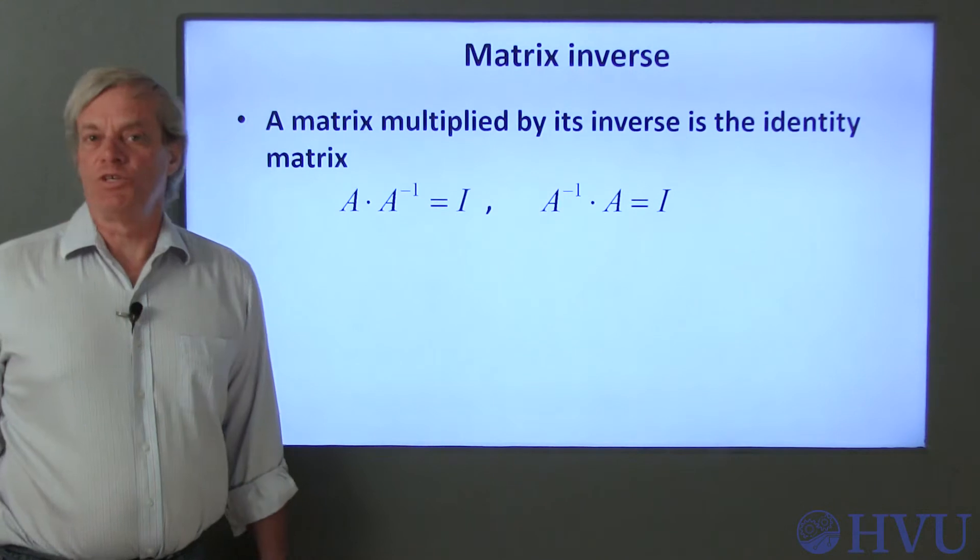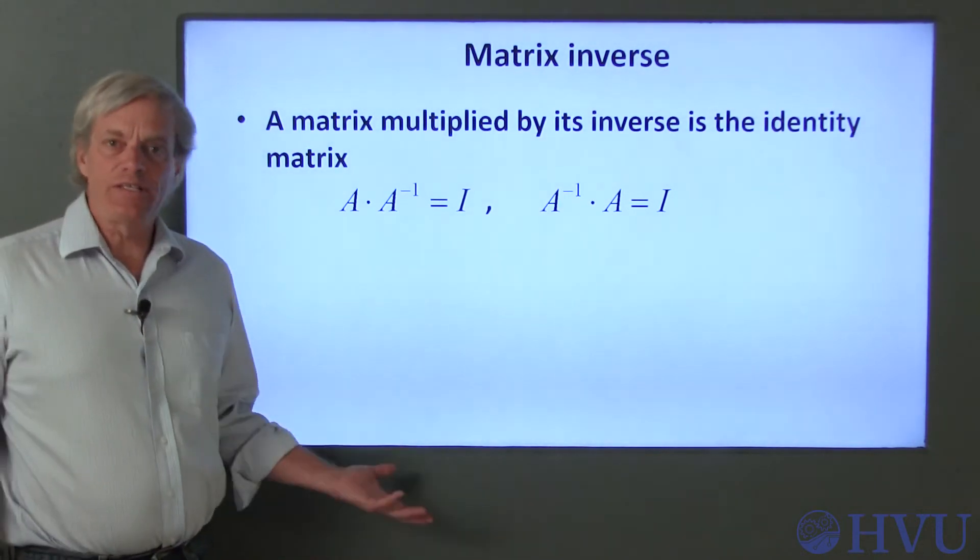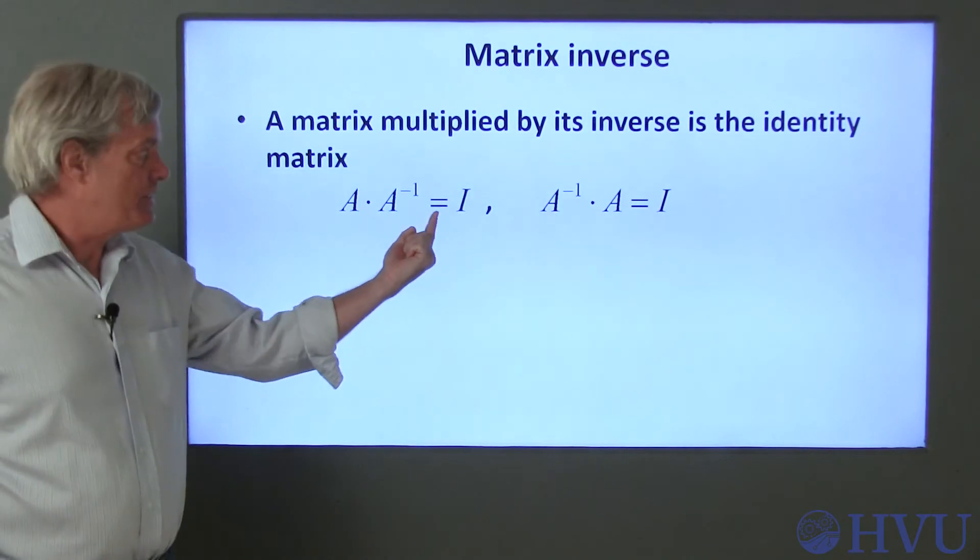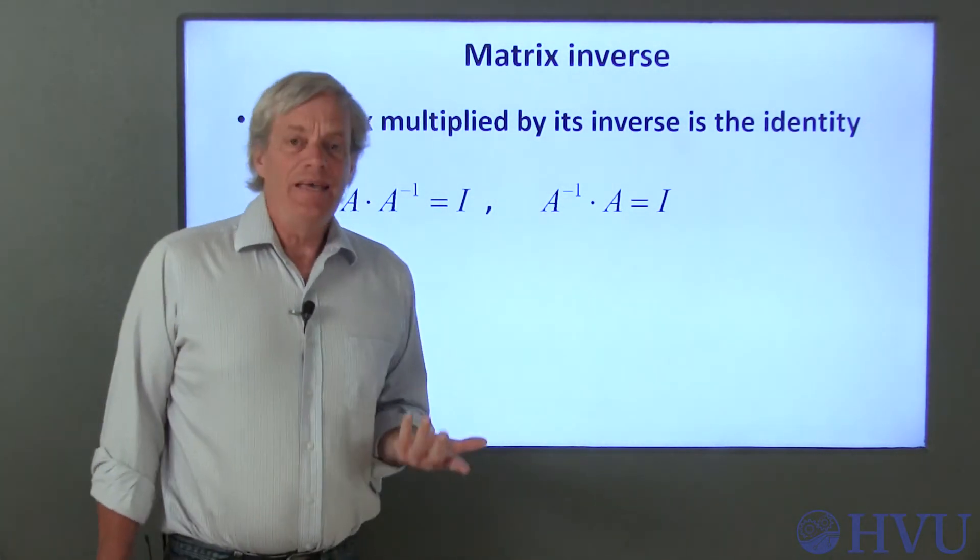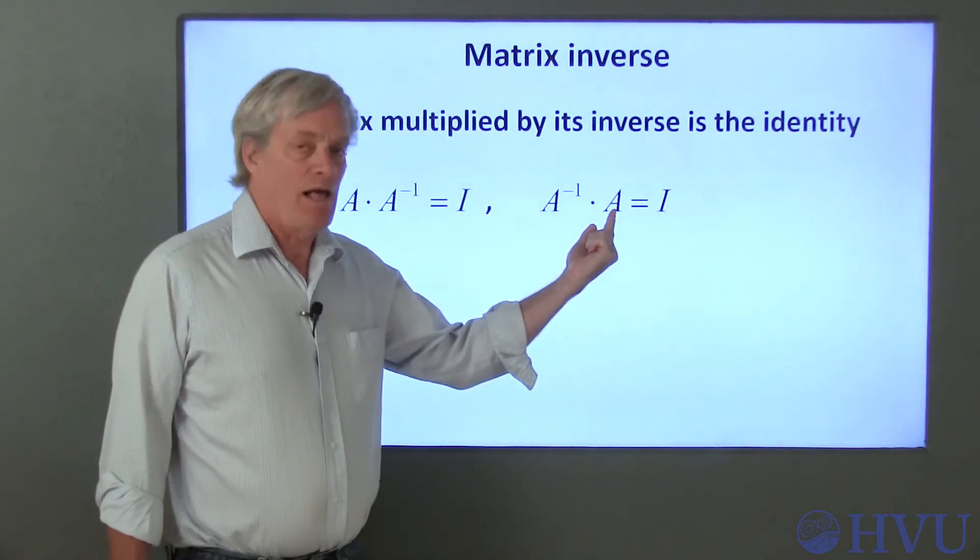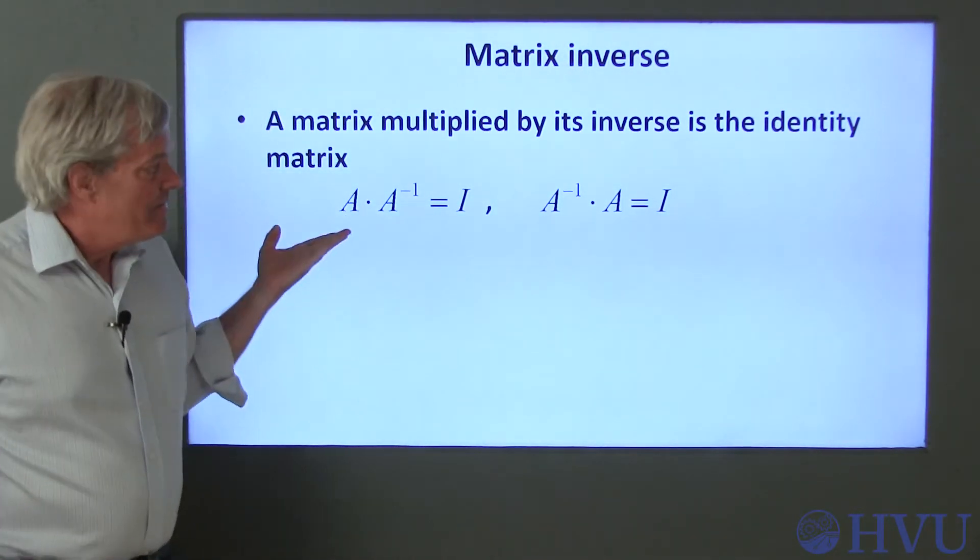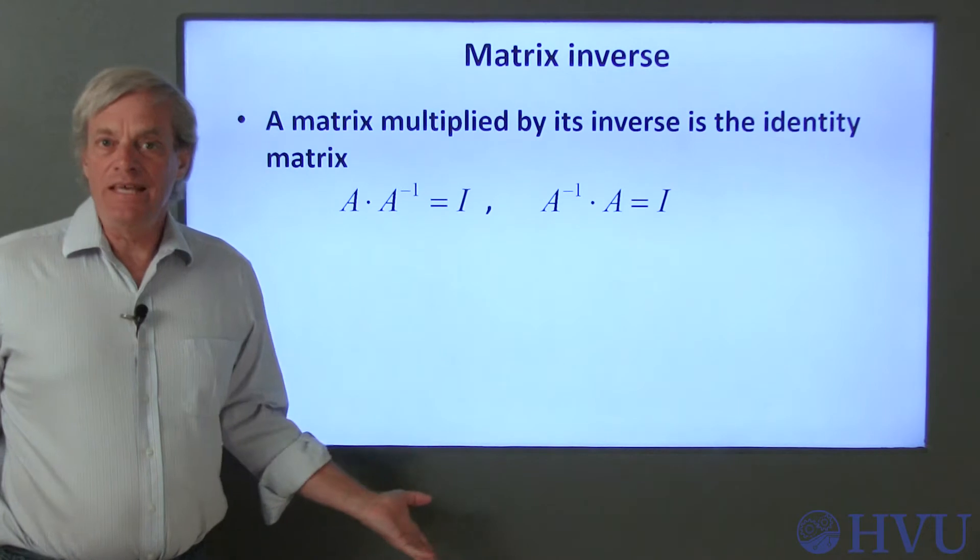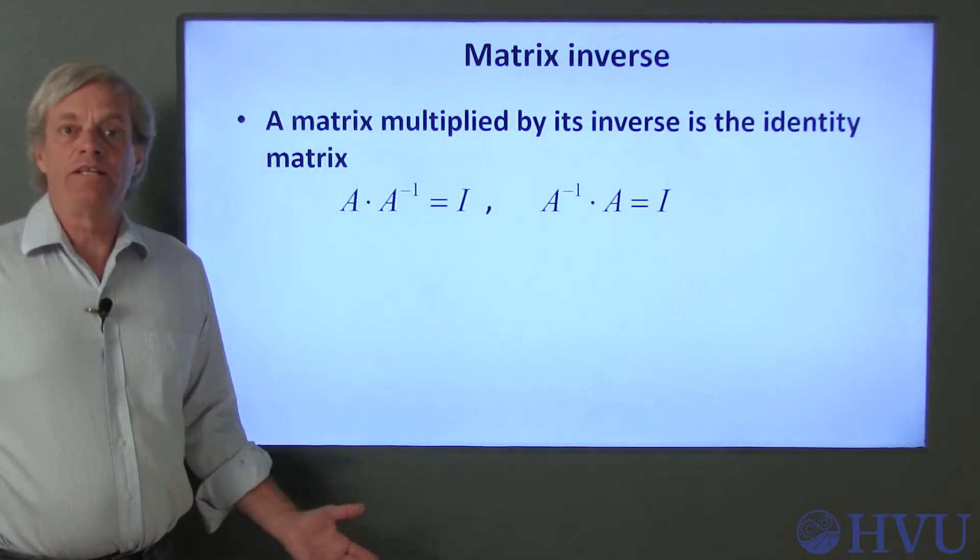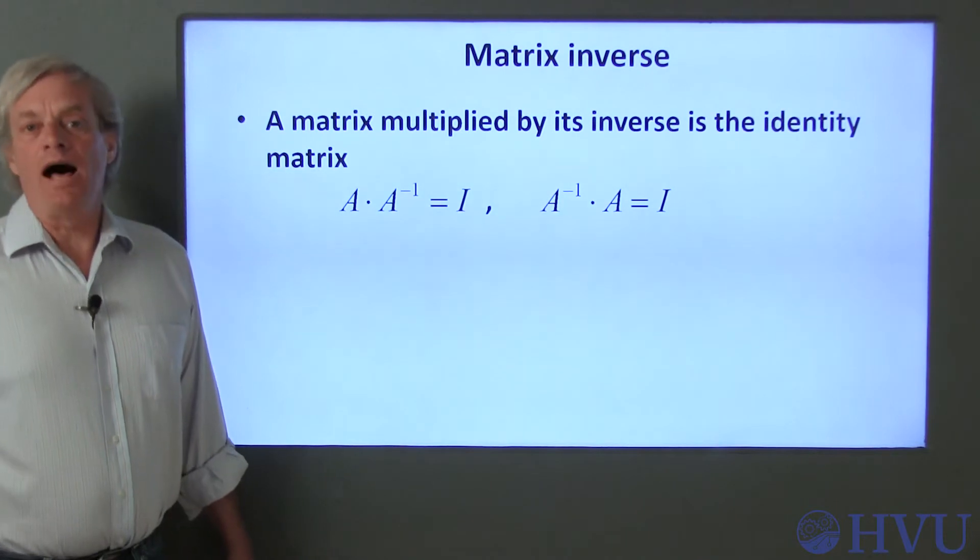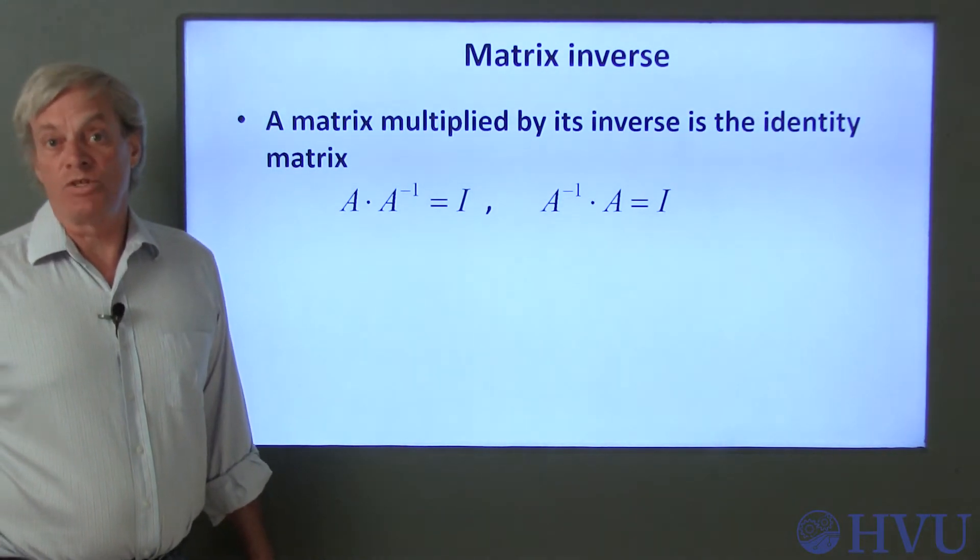Now we'll define the inverse of a matrix. Similarly to scalars, multiplication of a matrix by its inverse results in the identity matrix. It doesn't matter whether you pre-multiply or post-multiply the matrix by its inverse. This is the definition of what an inverse is, but it doesn't really help you know how to determine the inverse of a matrix yourself. For this class, we'll let Octave calculate the matrix inverses when necessary.